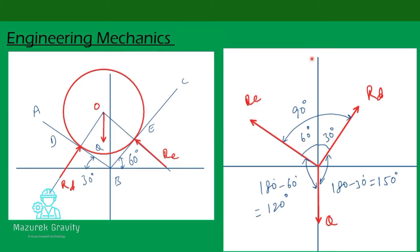The angle between Re and Rd is 90 degrees. Q is acting downwards, so the angle between Rd and Q is 180 minus 30, that is 150 degrees.